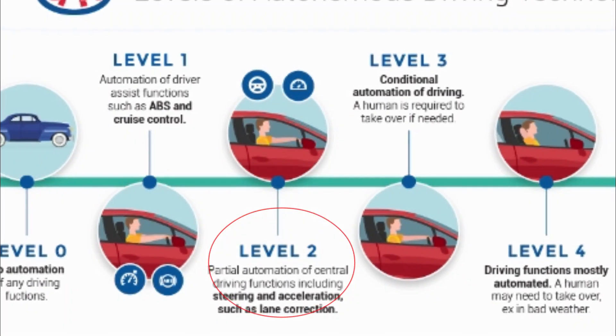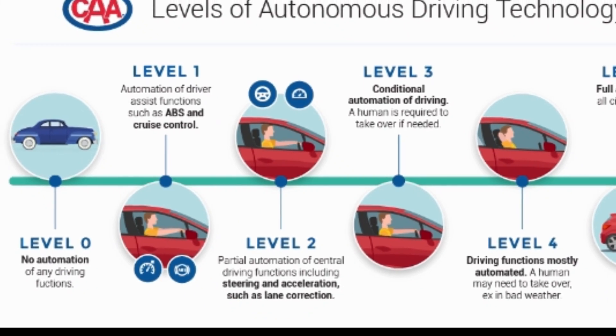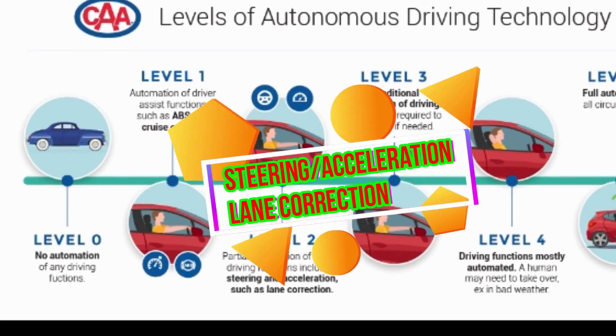On level 2, there is partial automation of central driving functions, including steering, acceleration, and lane direction.